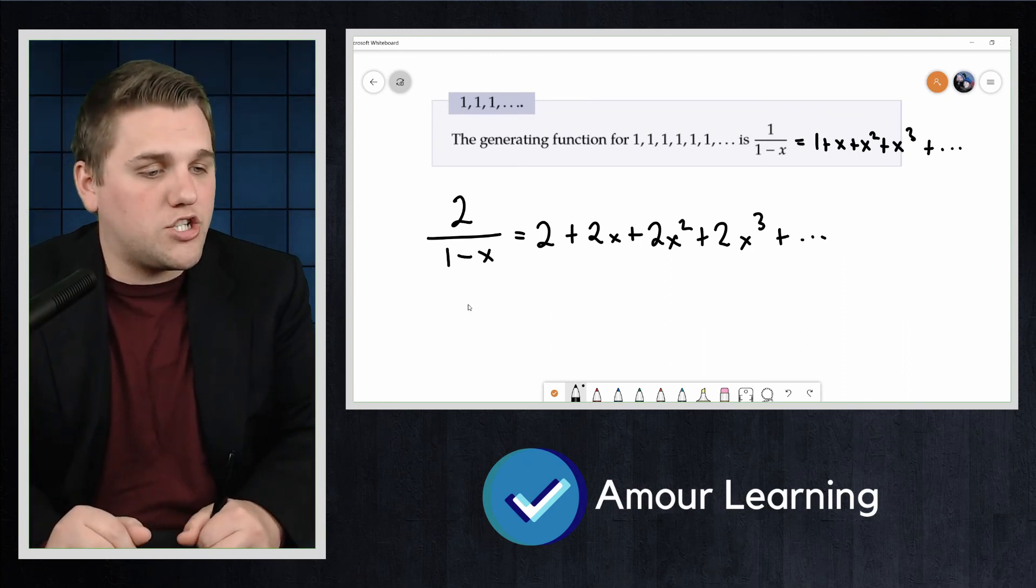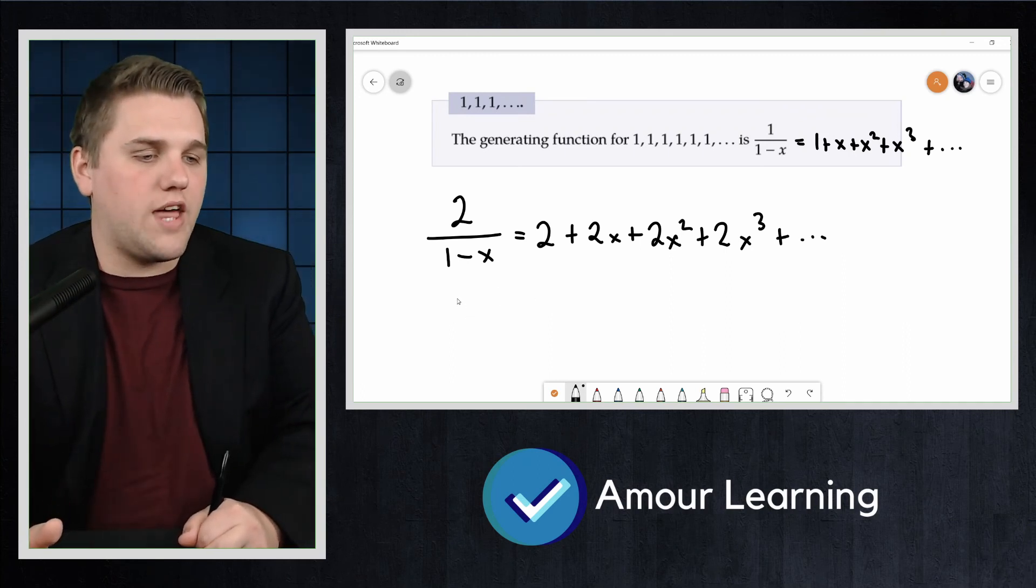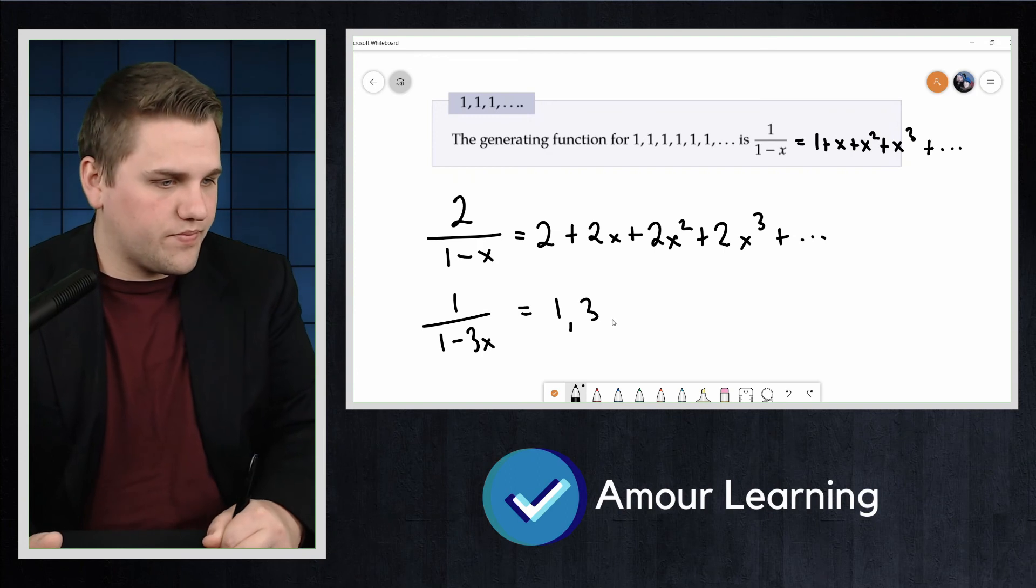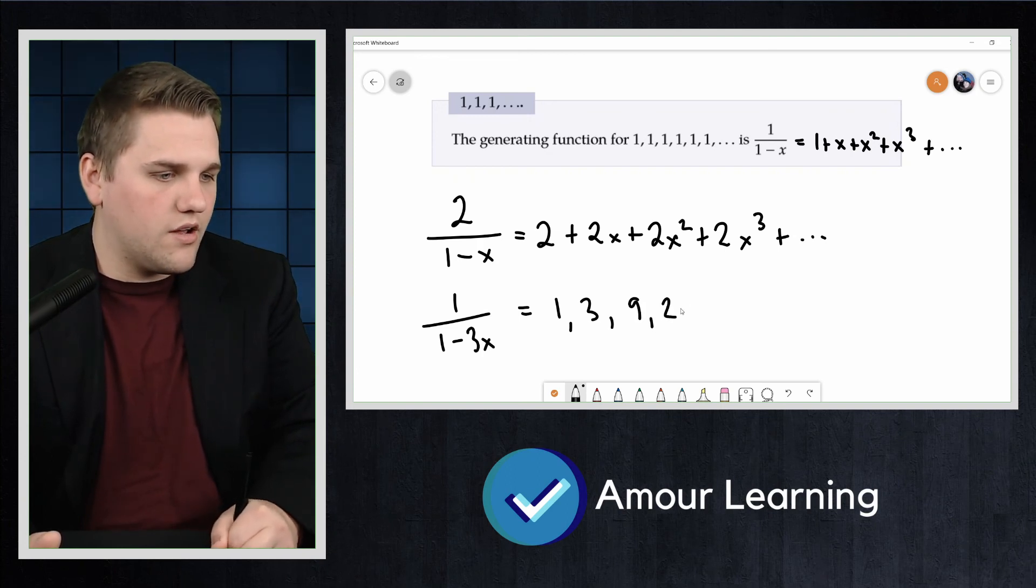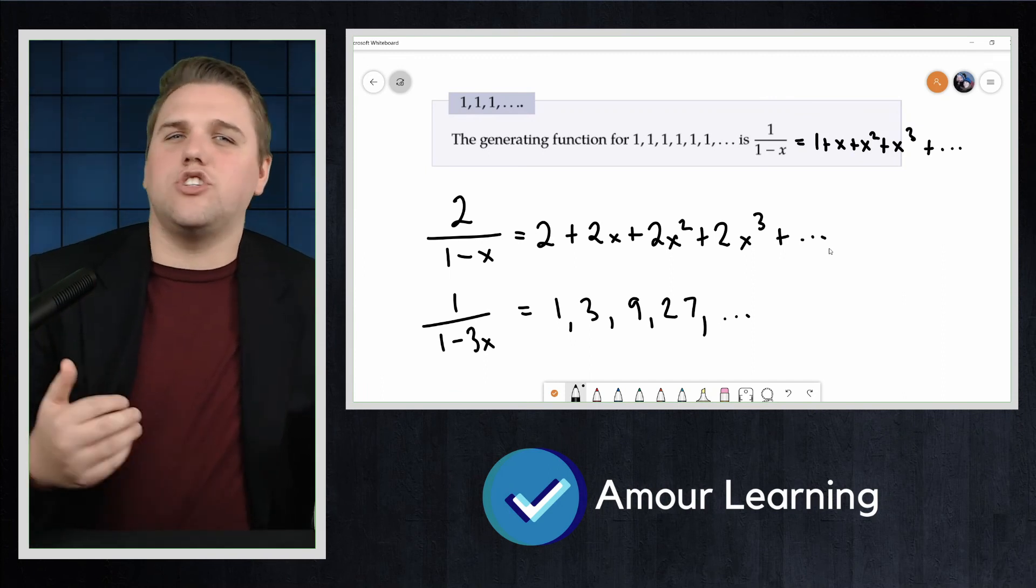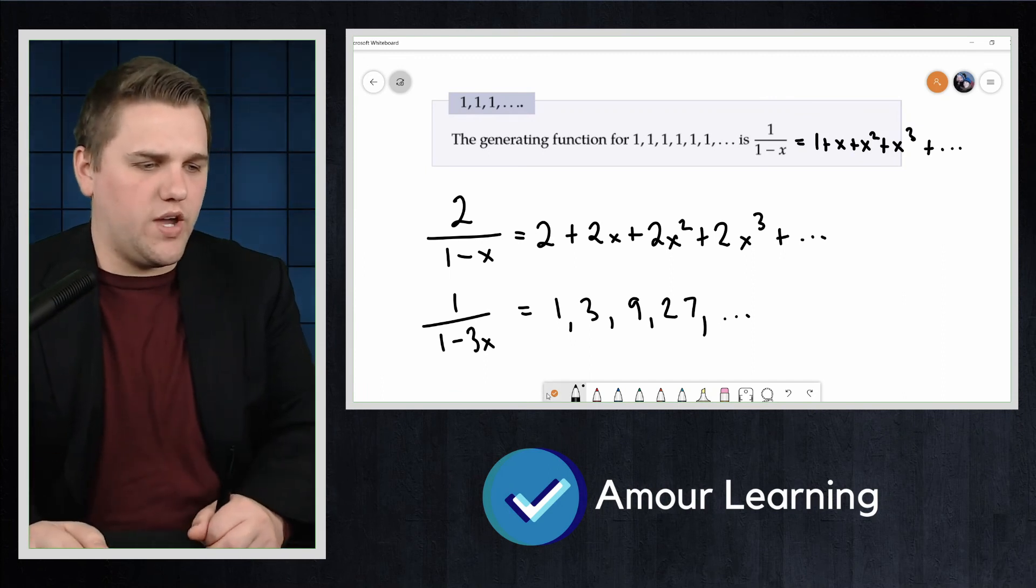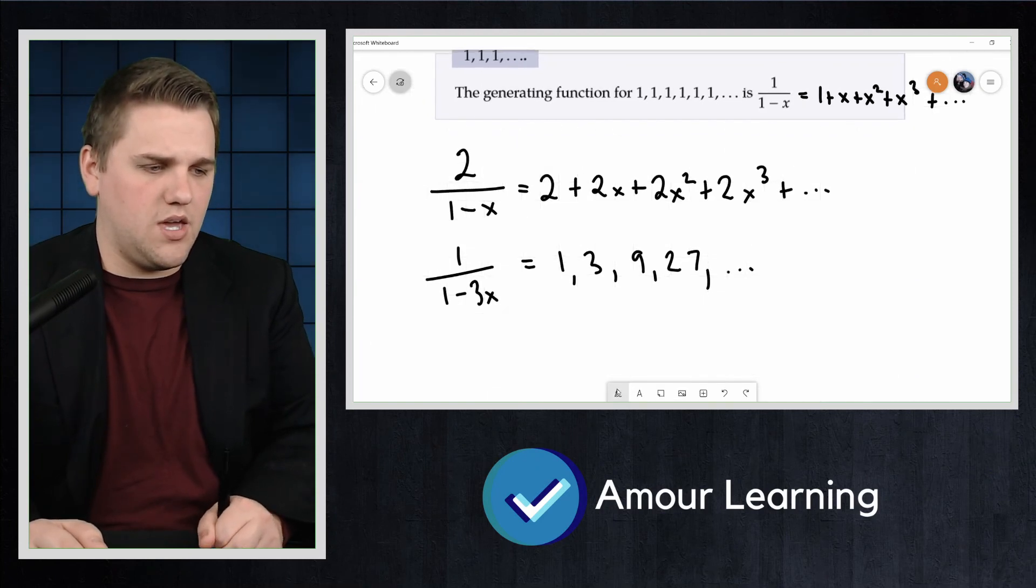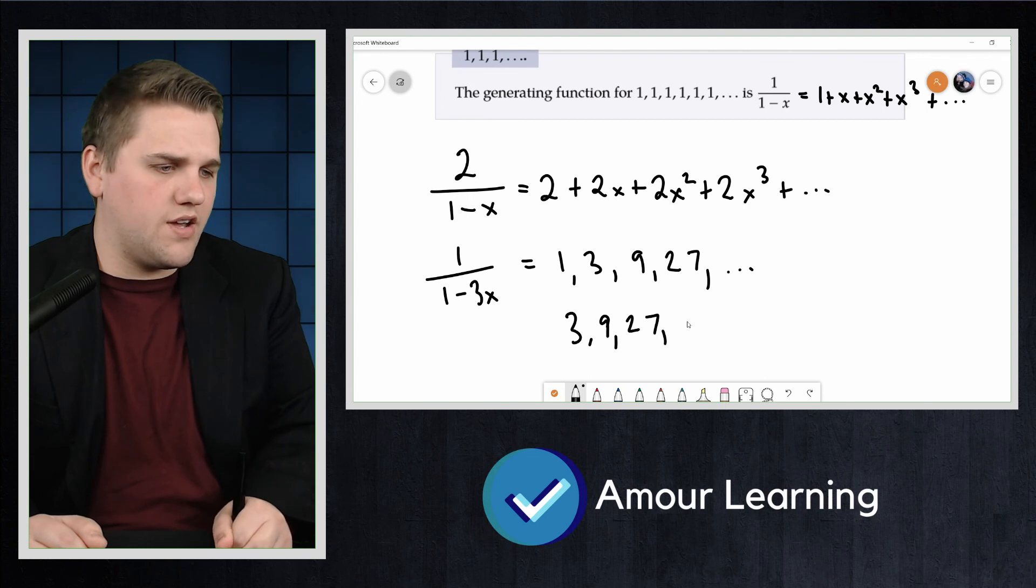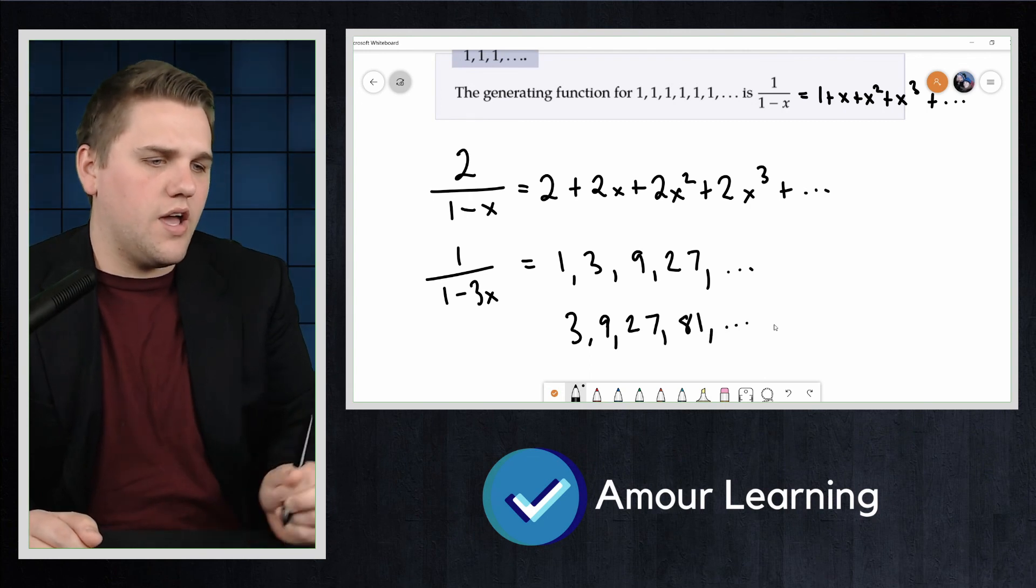Before I move on, we showed that 1/(1-3x) generates 1, 3, 9, 27, and so forth. But how would we find the generating function for the sequence 3, 9, 27, 81, and so forth?